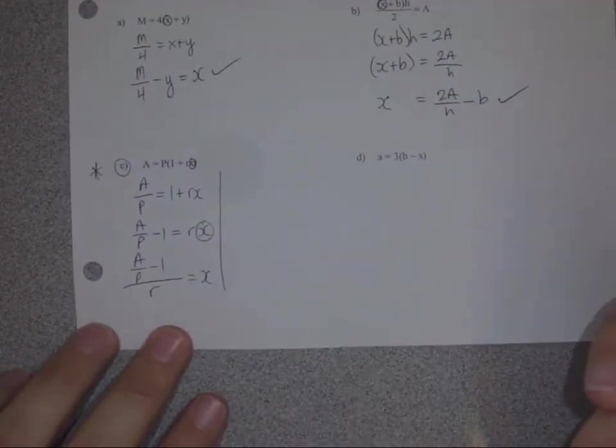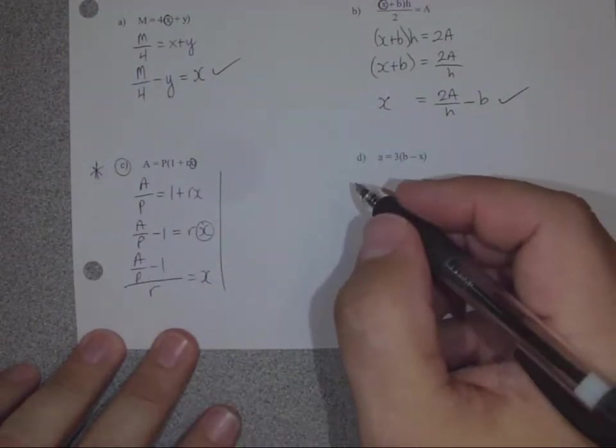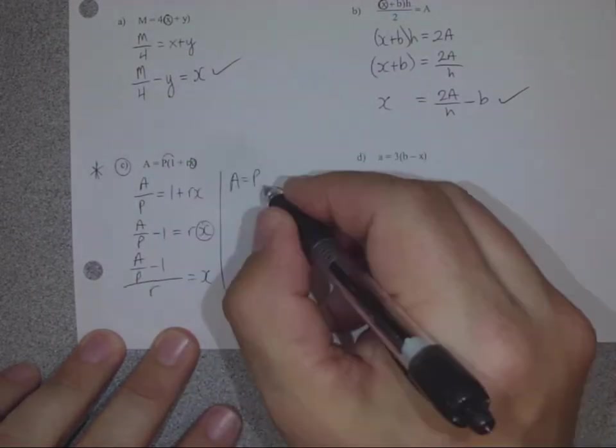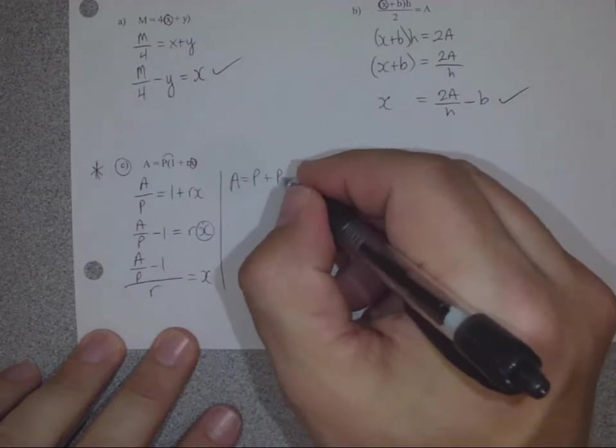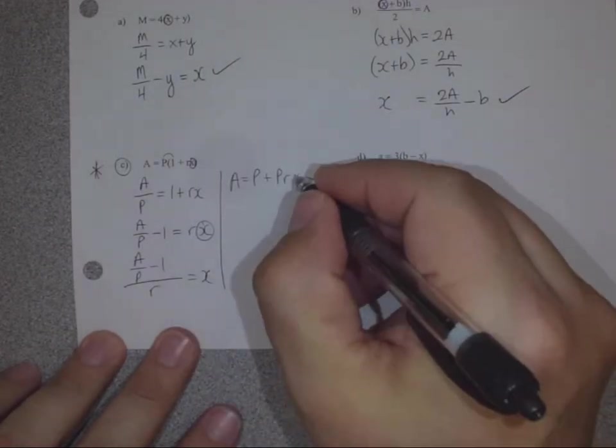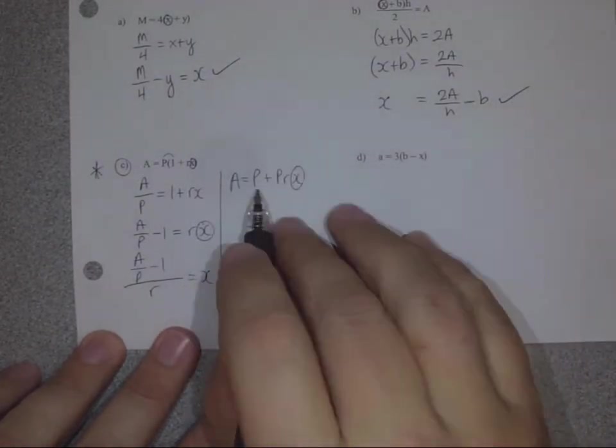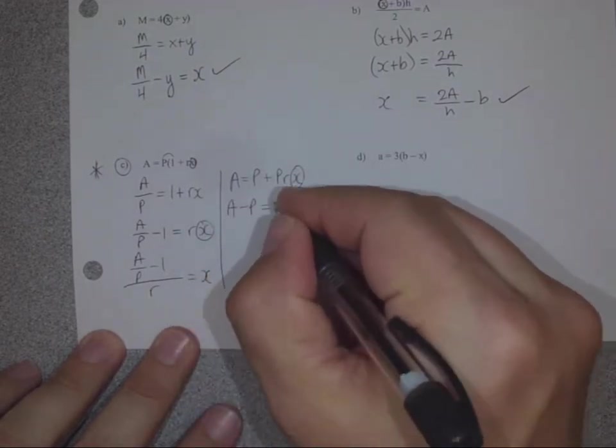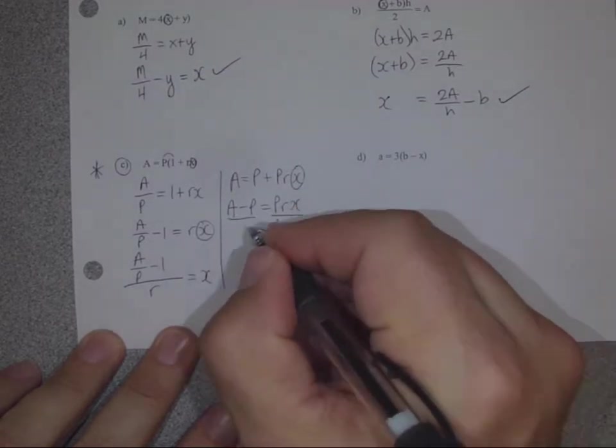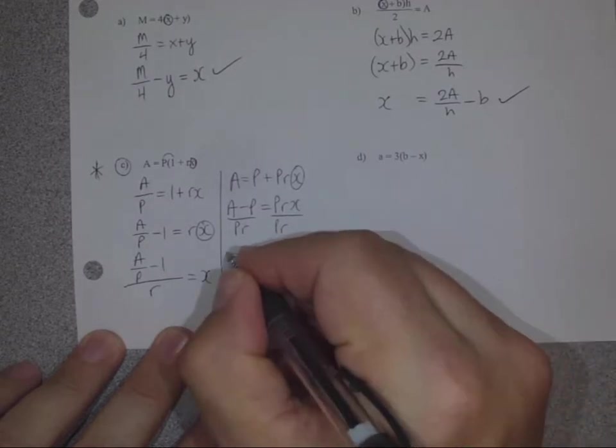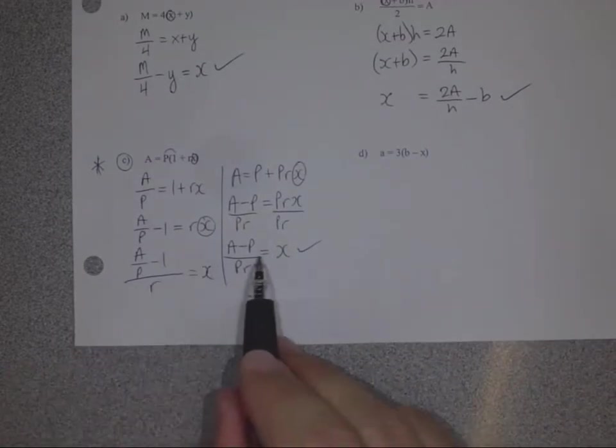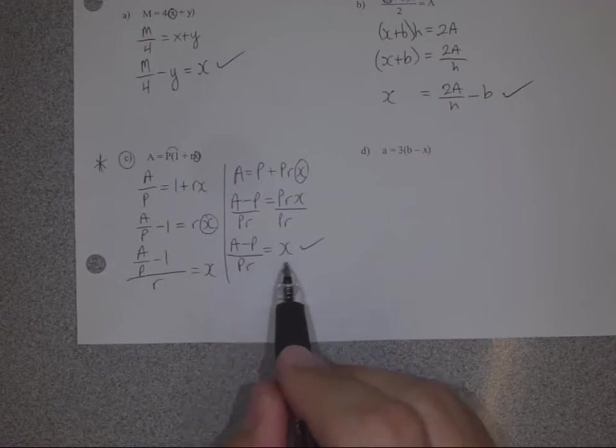So I'm going to give you an alternative way to do this. Instead of this method, we're actually going to multiply the p into the bracket. So p times 1 is p. p times rx is prx. Like so. That's using the distributive property. And if that's the case and we're still trying to solve for x, then we need to subtract this p first. a take away p equals prx. And divide both sides by pr. Well, that looks a lot better to me. a subtract p divided by pr. A lot nicer and a lot cleaner. You choose. Either one is correct. This one just looks a little better formatting-wise.